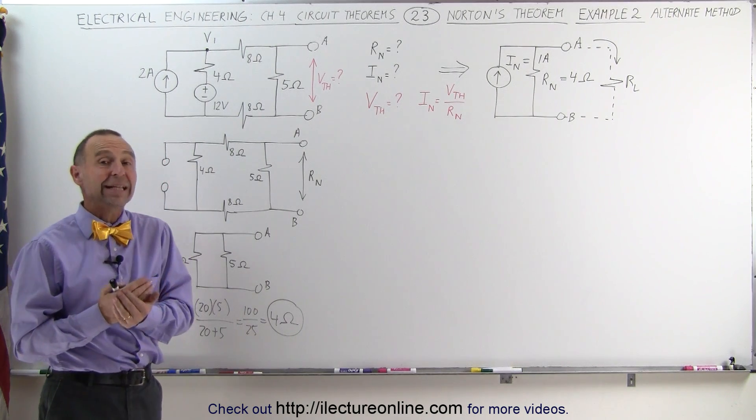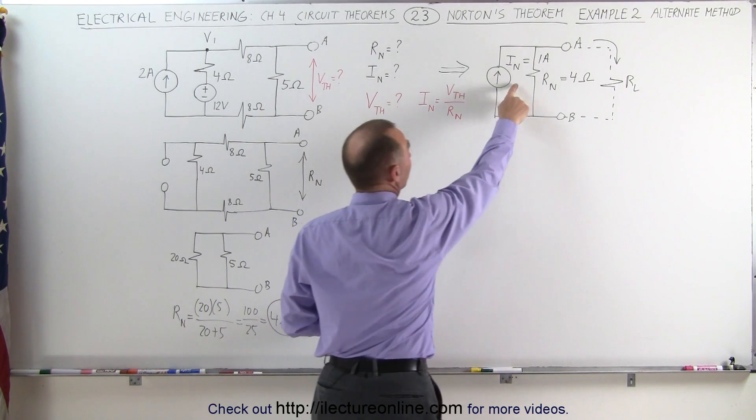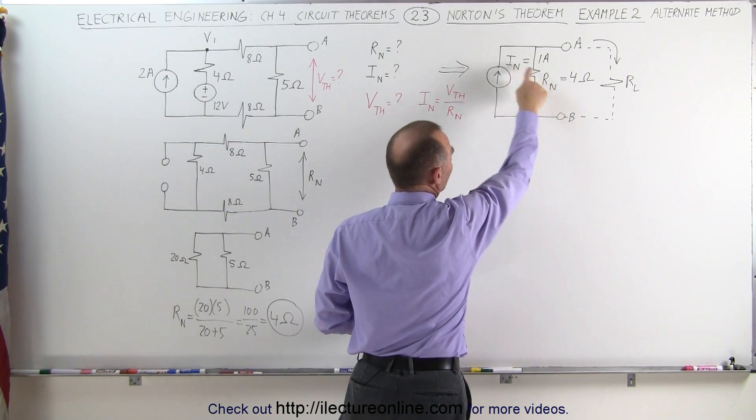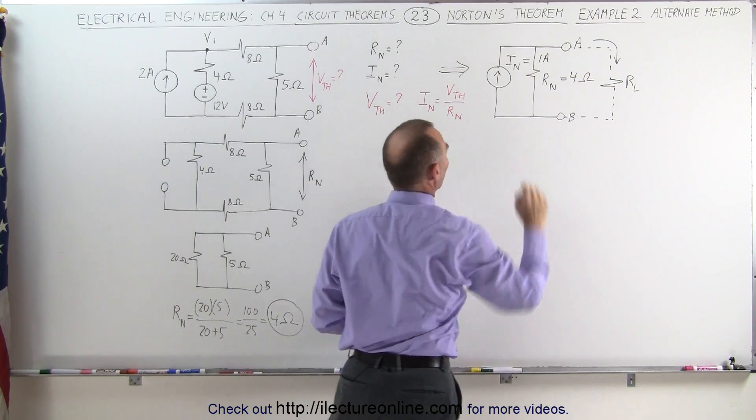We still are trying to find the equivalent Norton circuit by finding the Norton current and the Norton resistance, and from the previous video we knew that this was going to be 4 ohms and that's 1 amp.